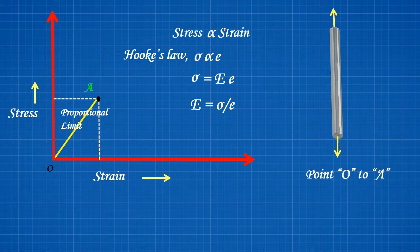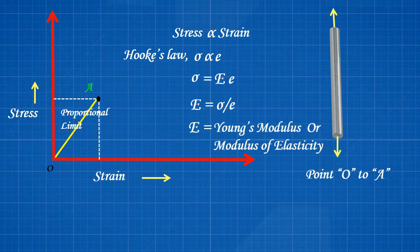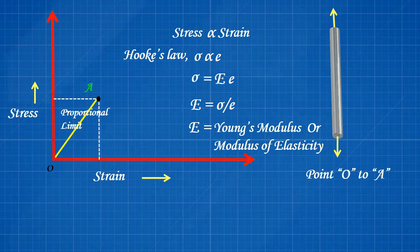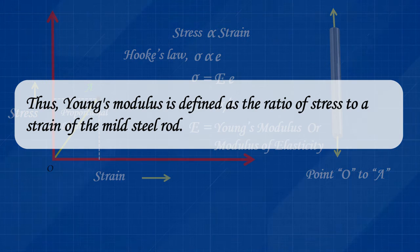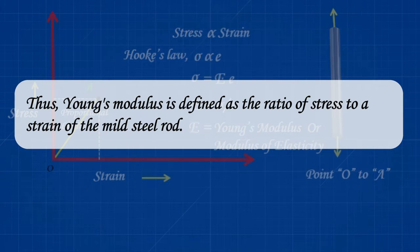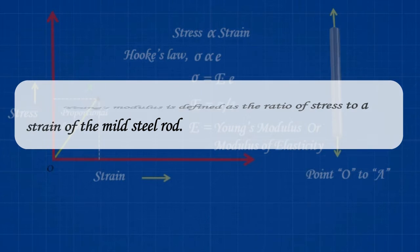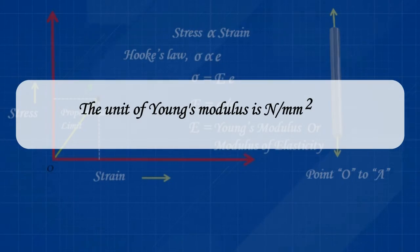E is equal to σ divided by ε. Where E is equal to Young's modulus or modulus of elasticity. Thus, Young's modulus is defined as the ratio of stress to a strain of the mild steel rod. The unit of Young's modulus is newton per millimetre square.